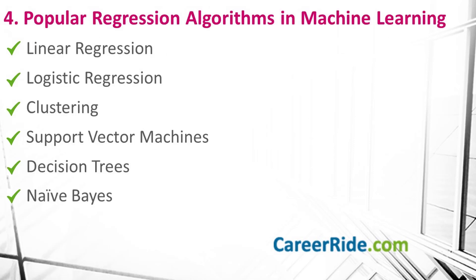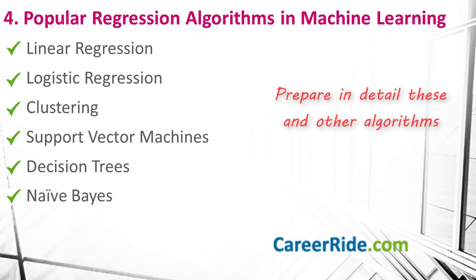What are the most popular regression algorithms used in machine learning? The most popular regression algorithms include linear regression, logistic regression, clustering, support vector machines, decision trees, naive Bayes, etc. It would make sense to be aware of the details of each of these algorithms, because this is one of the most important questions of your interview.